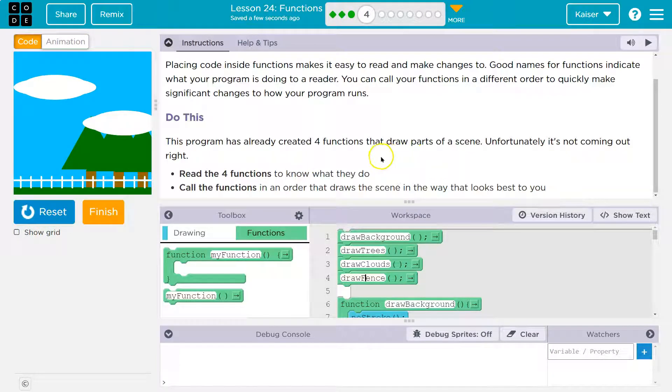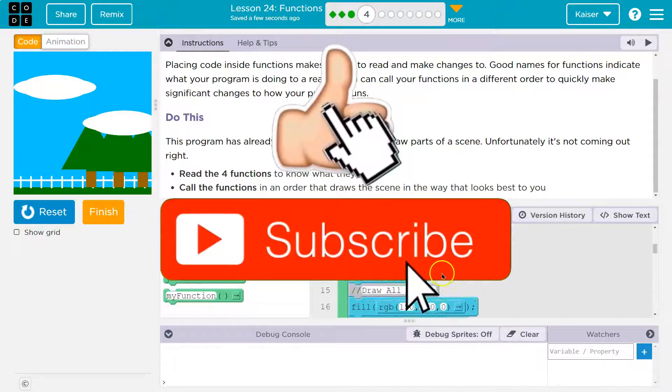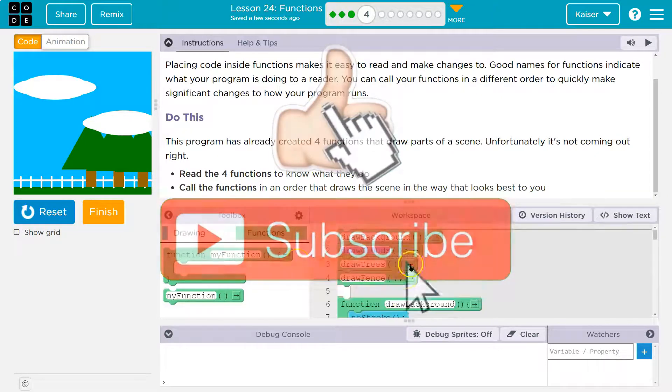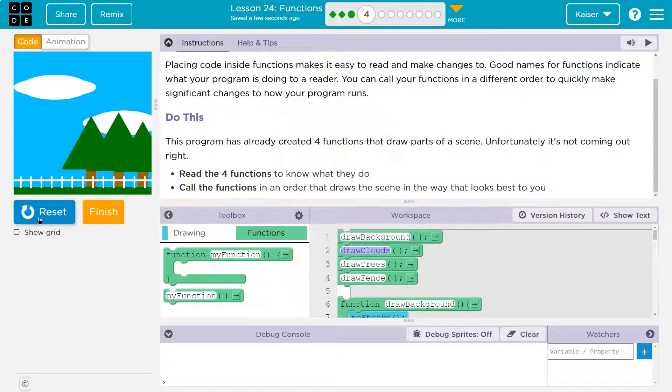Cool. All right, call it four functions. Oh, we can pick the order. Should the fence be in front of the trees? Wait a minute. I want the fence behind the trees. I want the fence in front of the trees. I want the clouds behind the trees. And see how we can just move blocks of code around like this. Otherwise, we'd have to grab all that code and move it up and down the screen. Boom. Ah, it's beautiful. Onward.